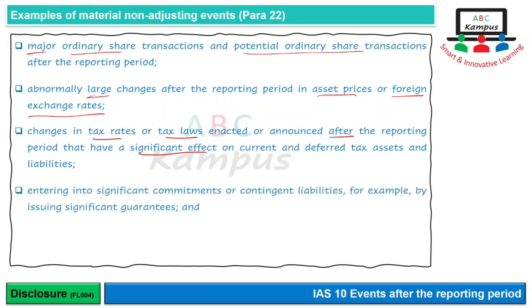Entering into significant commitments — جیسے کسی کے ساتھ commitment کر لینا کہ ہم asset import کریں گے، inventory sale کریں گے، یا contingent liabilities جیسے کوئی litigation جو year end کے بعد کے circumstances سے relate کرتی ہو اور جس میں huge amount pay کرنی پڑ سکتی ہو۔ اسی طرح کوئی significant guarantee issue کرنا۔ یہاں word 'significant' important ہے کیونکہ یہ ظاہر کرتا ہے کہ یہ ایک material item ہے۔